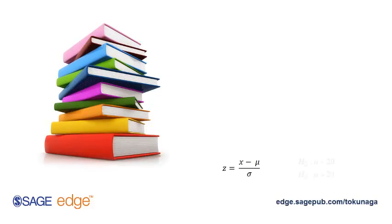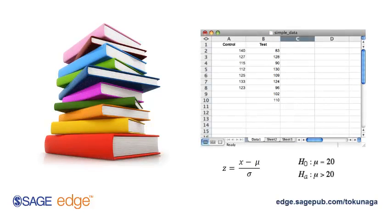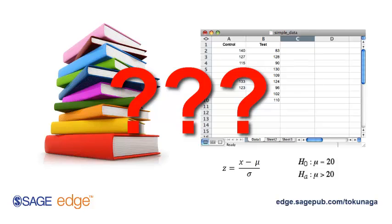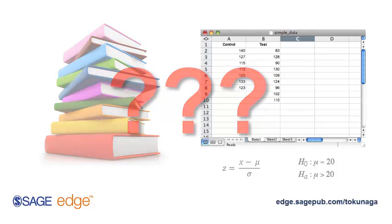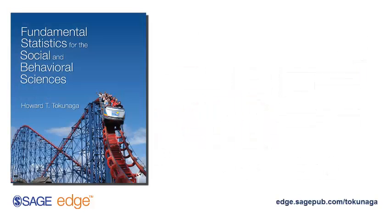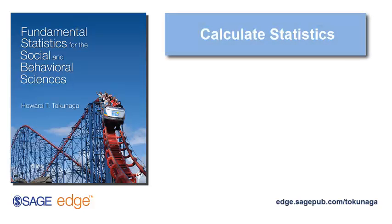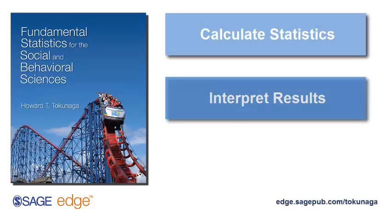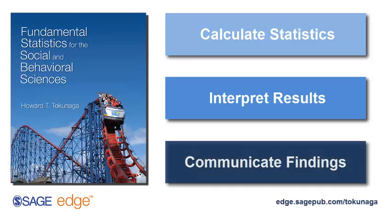Let's take a closer look. Most texts focus on providing formulas and very small sets of data crafted to demonstrate how to calculate specific statistical tests. They don't spend much time explaining what those numbers actually mean or how they're applied within context. This book was written to teach students not only how to calculate statistics, but how to interpret the results of those statistics in light of a study's research hypothesis, and perhaps most importantly, how to communicate those results effectively to others.